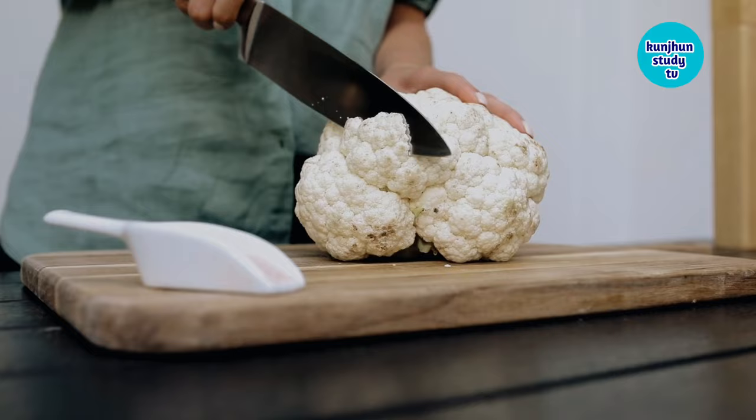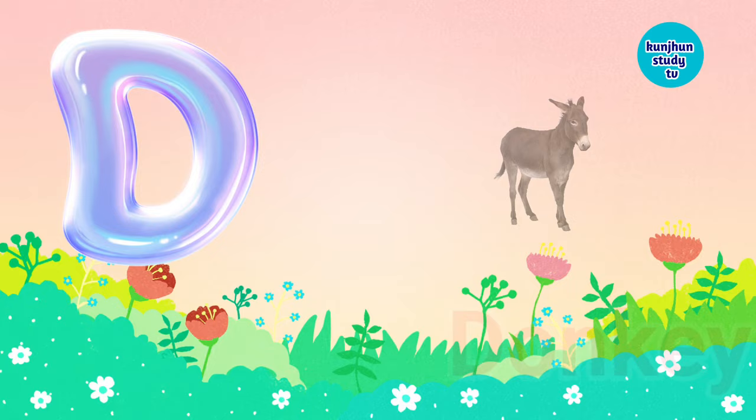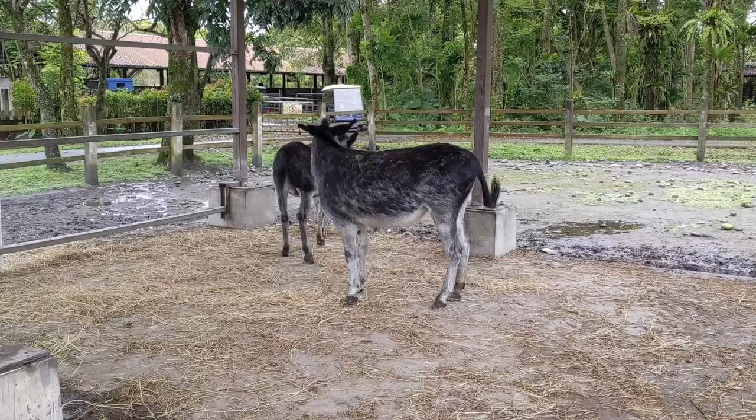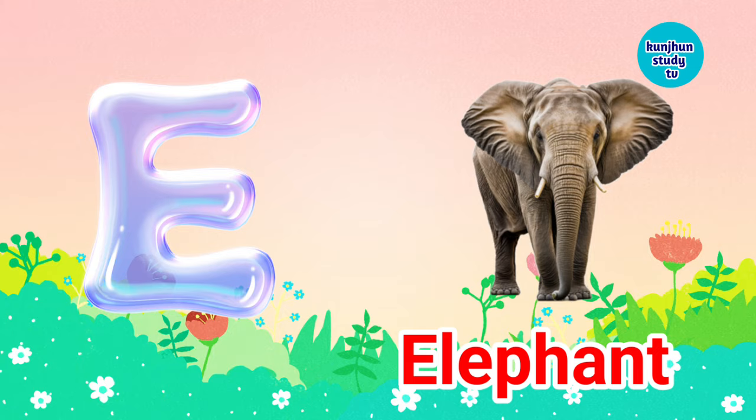D, D for Dunkey, Dunkey means Gadha. E, E for Elephant, Elephant means Hathi.